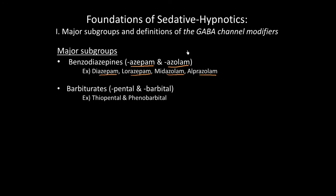On the street you might find different names for these. A couple of notable ones: they're sometimes referred to as downers, because of their CNS depressant effects. My favorite is when people call them z-bars, referring to Xanax — unfortunately spelled with an X. Xanax is also known as alprazolam.